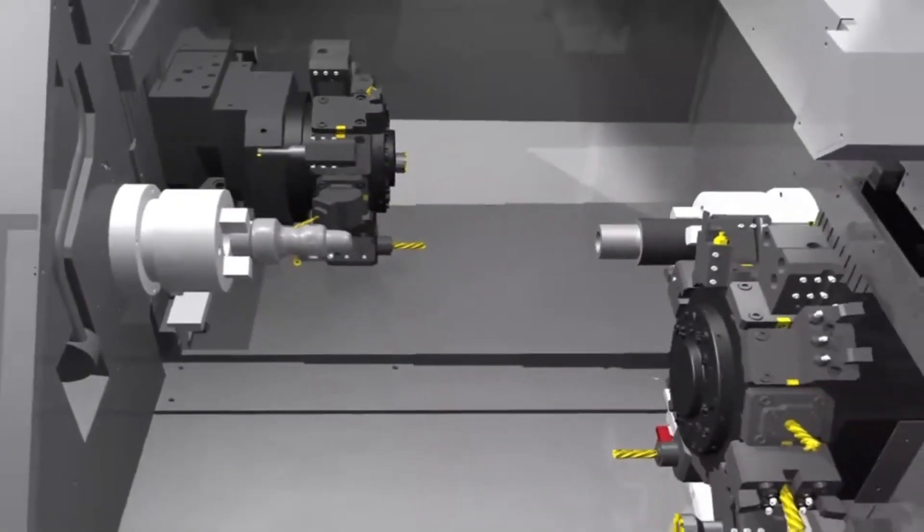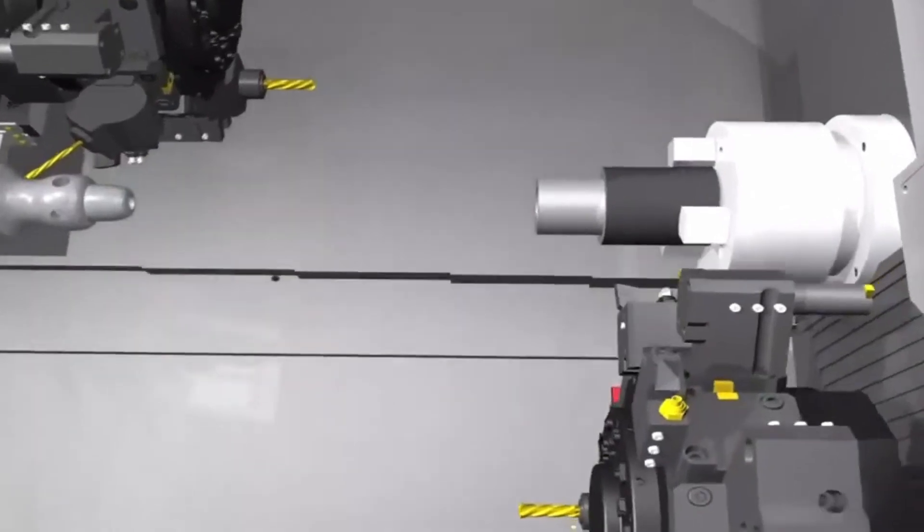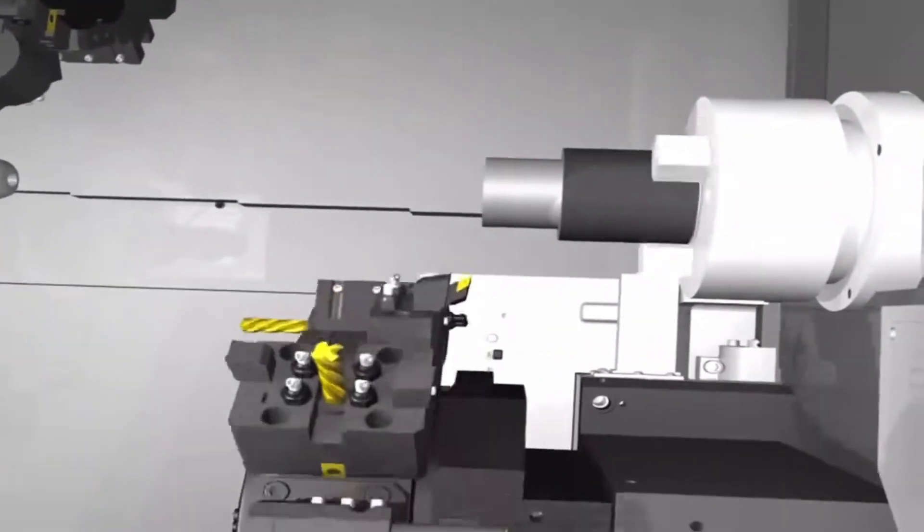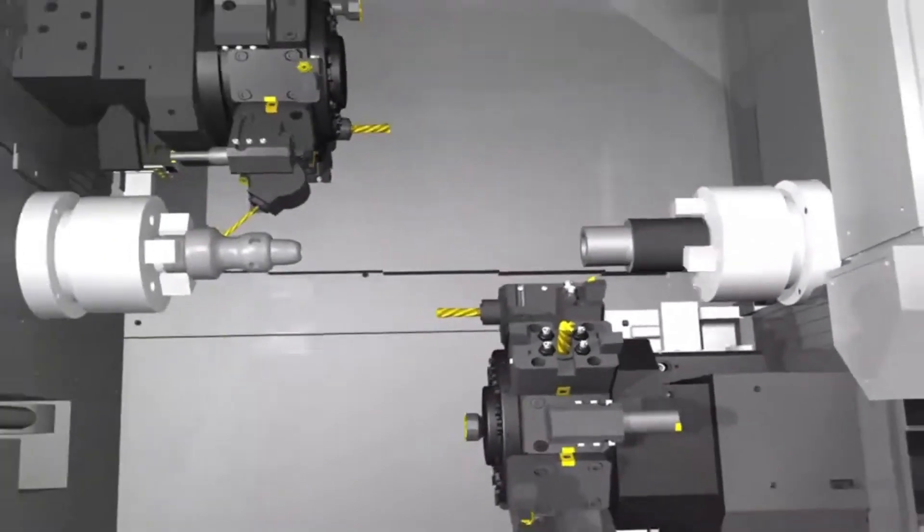At each stage of cutting, left-right spindle and upper-lower turret can perform cutting independently to demonstrate better performance than two standard lathes.